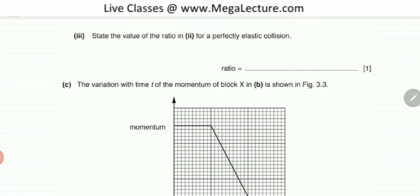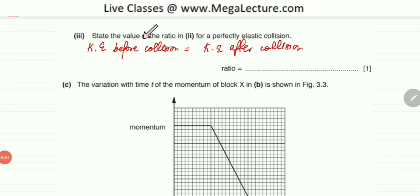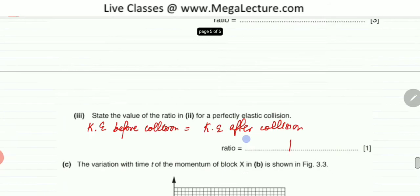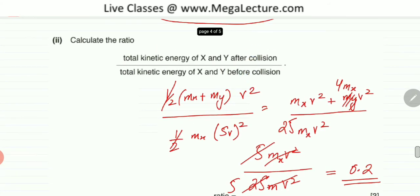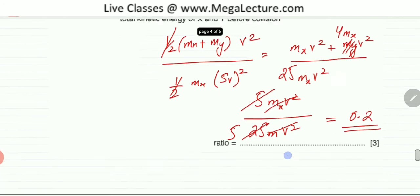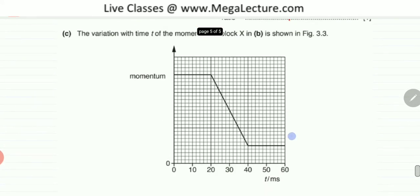The next part asks for this ratio for a perfectly elastic collision. For a perfectly elastic collision, kinetic energy before equals kinetic energy after, so the ratio equals 1. Since our calculated ratio is 0.2, not 1, this collision is definitely not elastic.